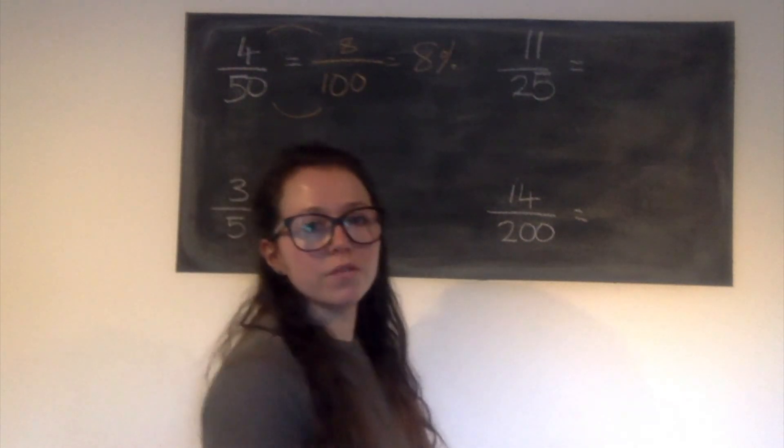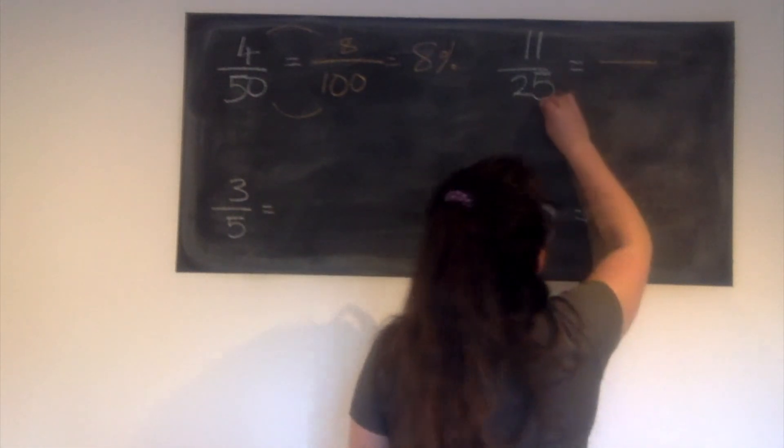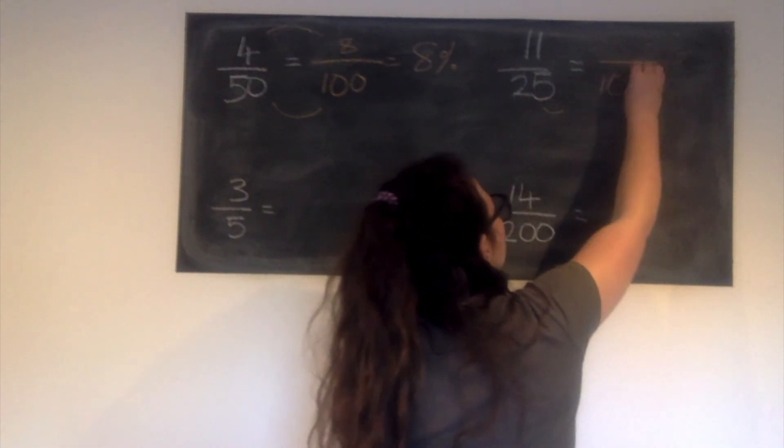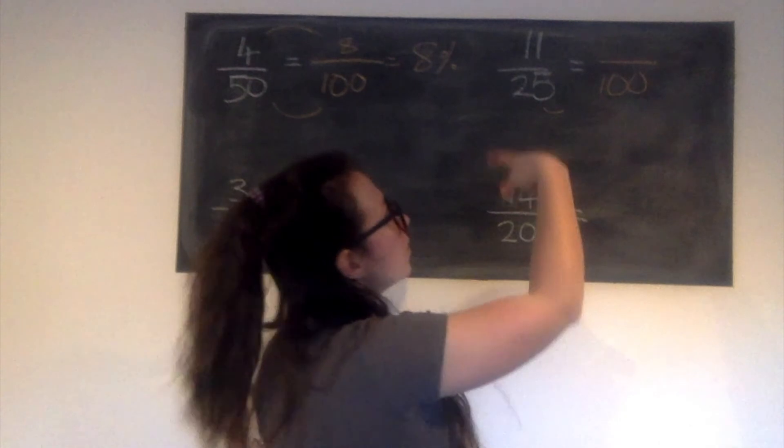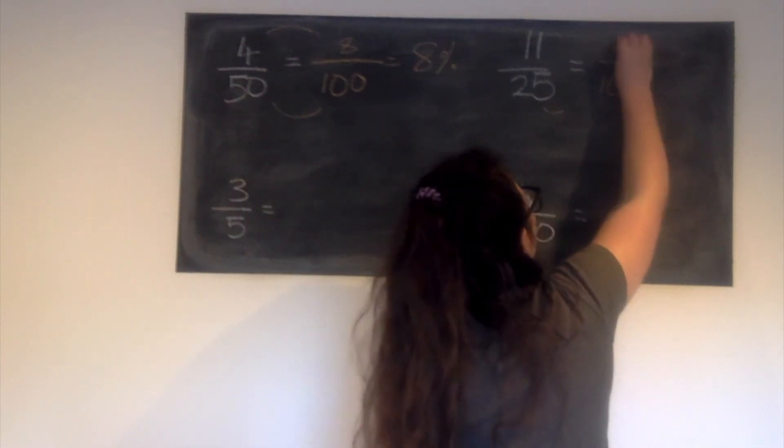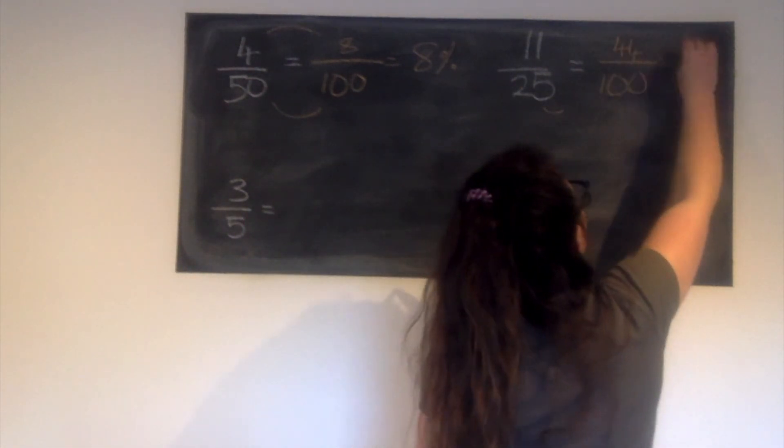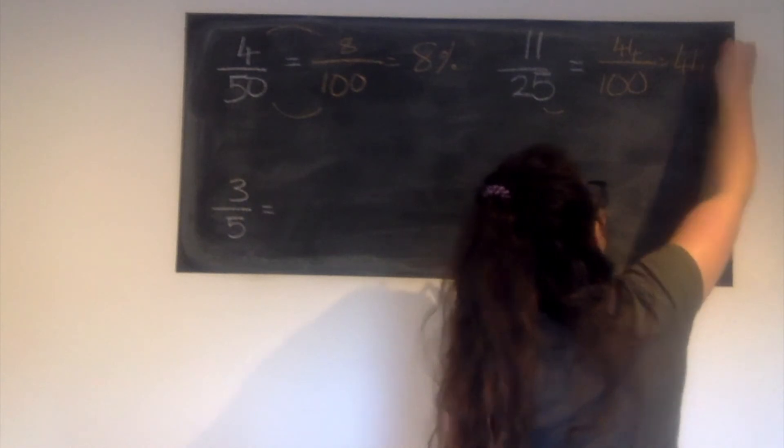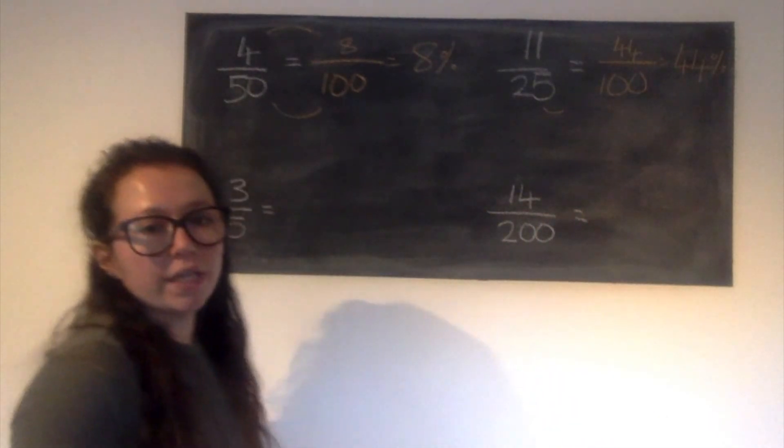Next one, 11 twenty-fifths. We looked at twenty-fifths. We must multiply that by 4 to get the denominator as 100. Do the same to the numerator, which gives us 44. 44 hundredths is 44%. Next two are a little bit trickier.